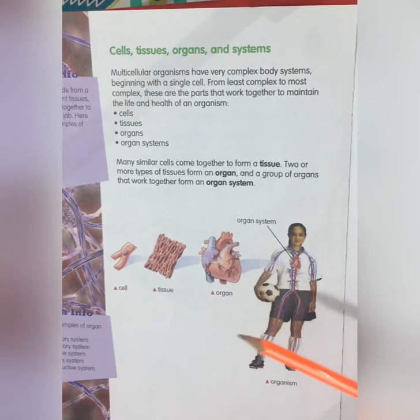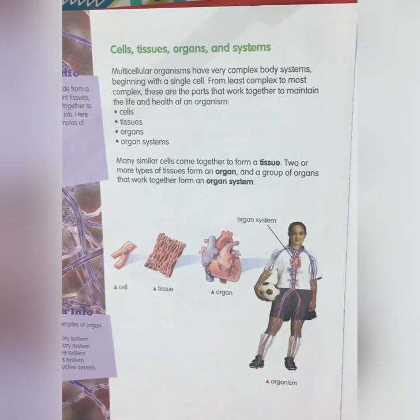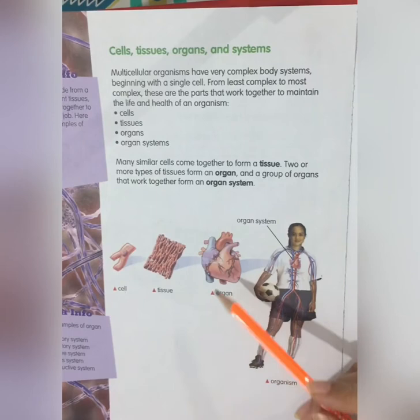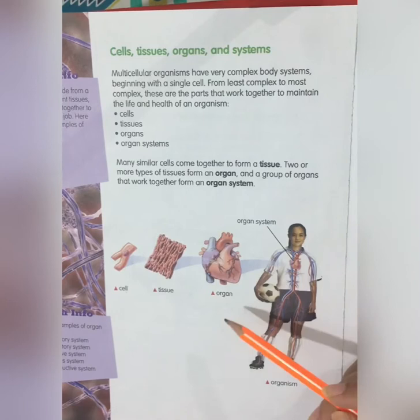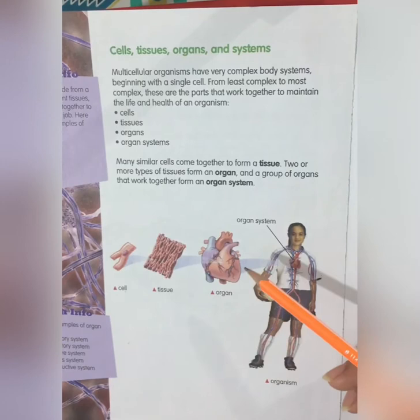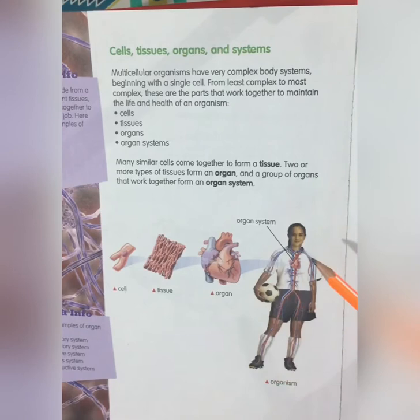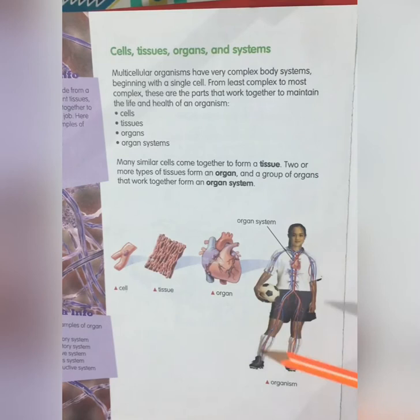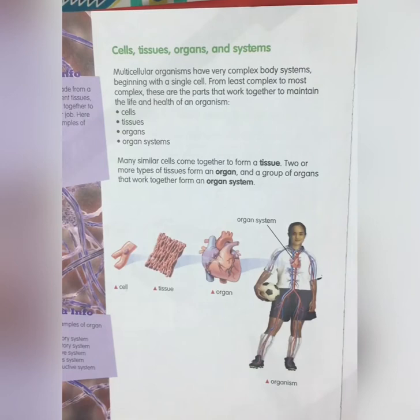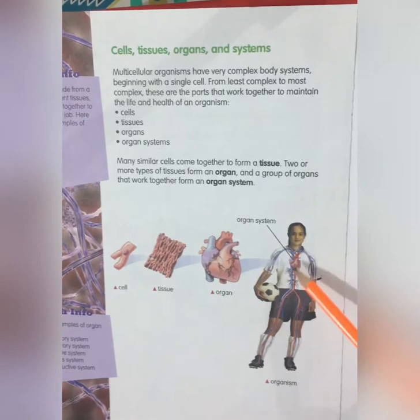An organ is made from many tissues, and an organ system is made from many organs working together to perform a particular function. For example, the stomach functions in our digestive system, and the brain is also an organ. For plant examples, the leaf and root are all organs, and together they form organ systems that work together to do a particular job.